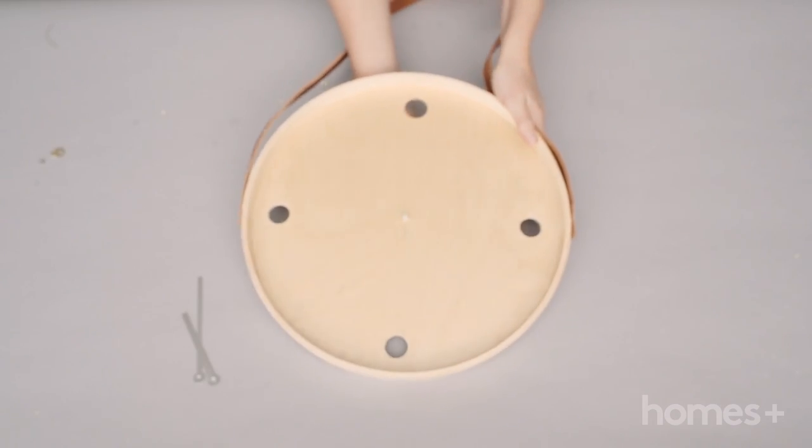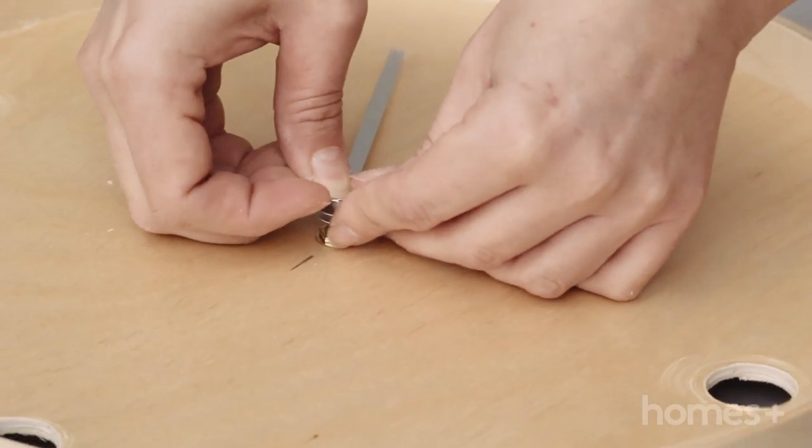Insert your clock mechanism through the center hole, attach clock hands and hang on the wall.